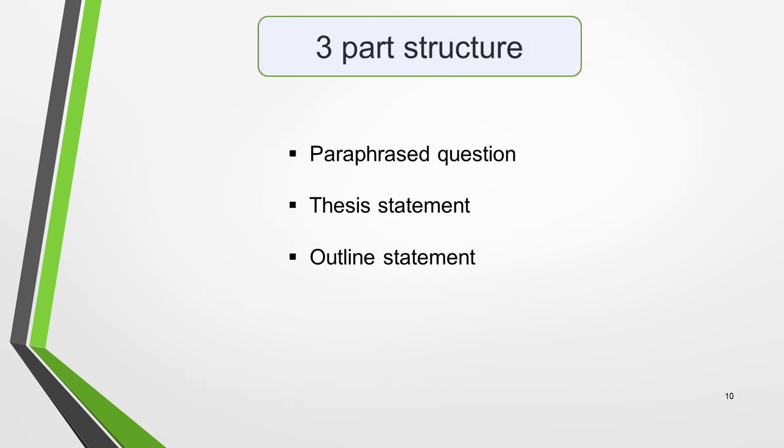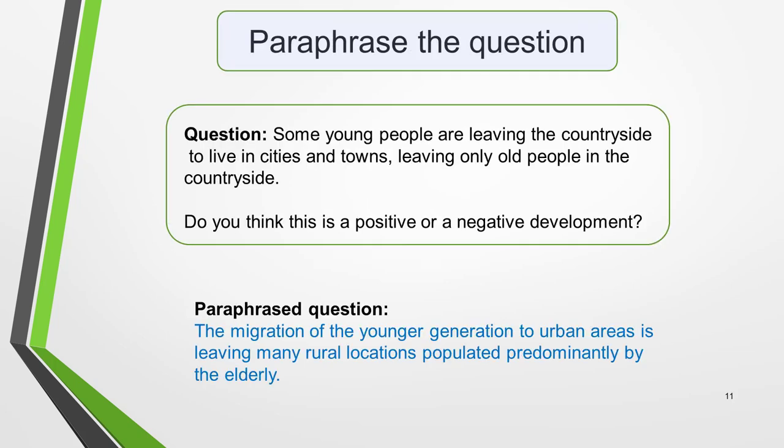We're now ready to start writing our introduction. Here's a reminder of the three-part structure: paraphrased question, thesis statement, and outline statement. Start your introduction by paraphrasing the question. Here's the question we're going to work on: 'Some young people are leaving the countryside to live in cities and towns, leaving only old people in the countryside. Do you think this is a positive or a negative development?' To paraphrase the question, all you need to do is write the question statement in a different way, using a different sentence structure and synonyms of key words.